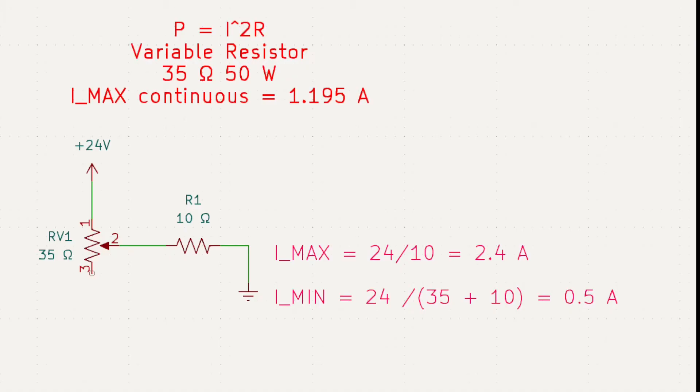Under those conditions, maximum current is 24 volts divided by 10 ohms, which gives us about 2.4 amps. The minimum current occurs when the resistor is swung in the opposite direction, in which case we'll see both 35 ohms and 10 ohms in series.